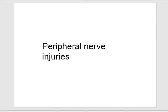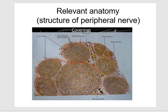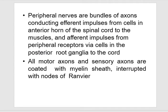Assalamu alaikum, my dear students. Today we are going to talk about peripheral nerve injuries. This is the anatomy of a peripheral nerve. These are bundles of axons conducting efferent impulses from cells in the anterior horn of the spinal cord to the muscles, and afferent impulses from peripheral receptors via cells in the posterior root ganglion to the cord.